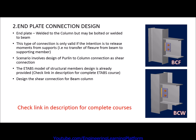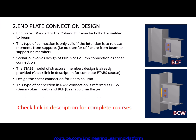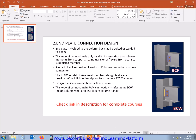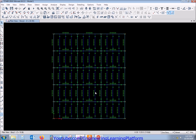We have two types of connection in RAM Connection: BCW (beam-column web) and BCF (beam-column flange) connection. In this video we will have a look at both types of connection designs.